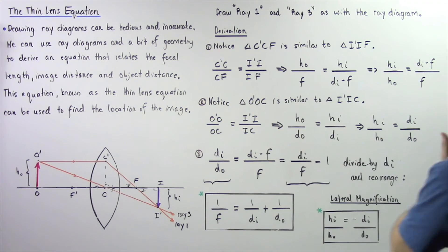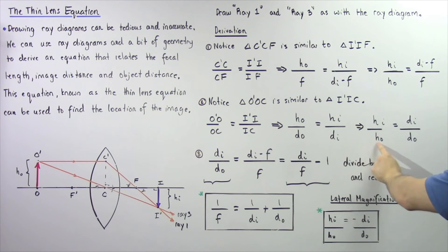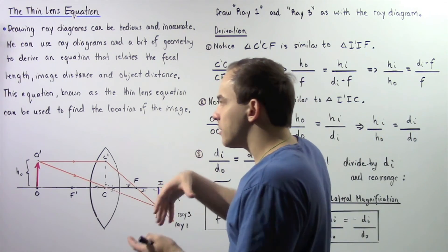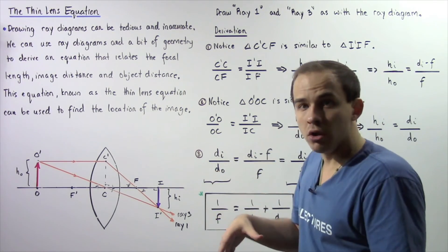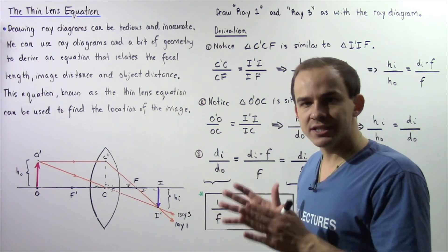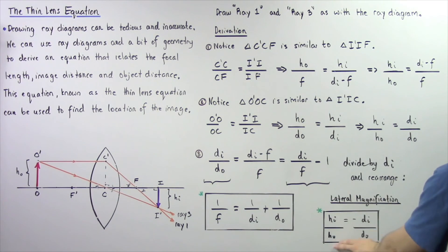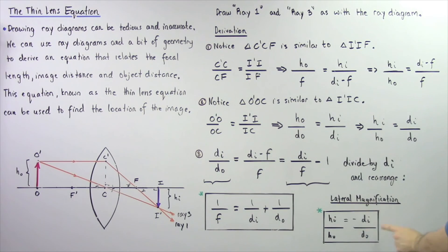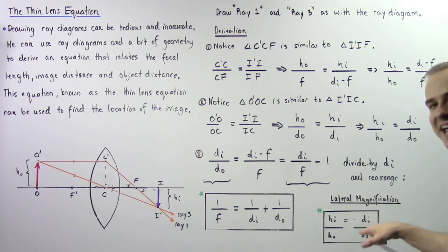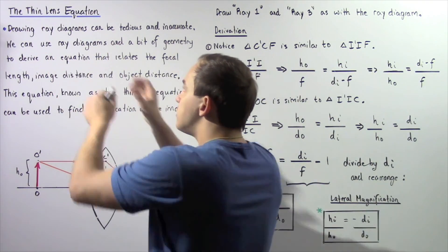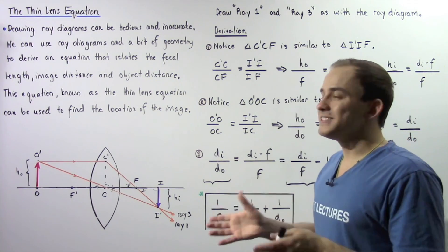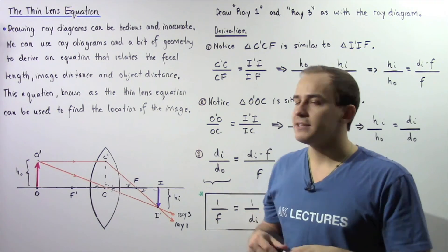Going back to step two, HI/HO = DI/DO tells us how much bigger or smaller the image is compared to the object — this is the lateral magnification. The lateral magnification is defined as M = HI/HO = −DI/DO. In the next lecture, we'll discuss where this negative sign comes from and examine how to use the thin lens equation with the sign conventions for convex and concave lenses.